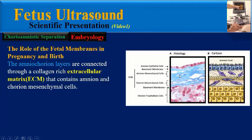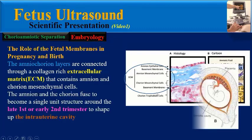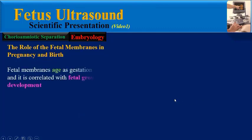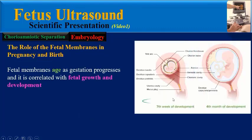The amnion and chorion layers are connected to a collagen-rich extracellular matrix that contains amnion and chorionic mesenchymal cells. Amnion and chorion fuse to become a single unit structure around the late first or early second trimester to shape the intrauterine cavity.